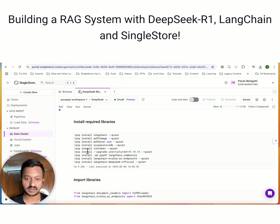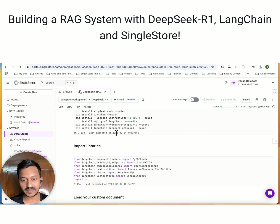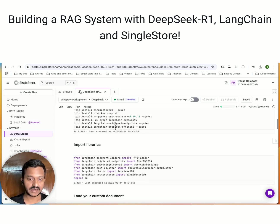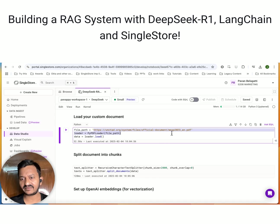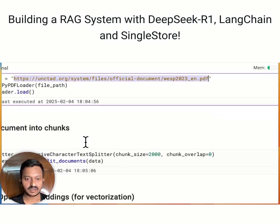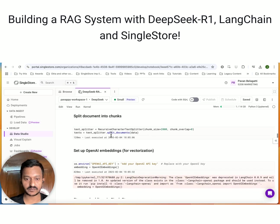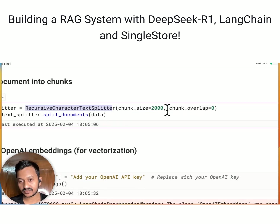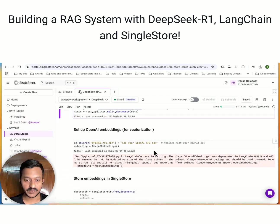Install the required libraries - LangChain, SingleStore, LangChain NVIDIA endpoints, LangChain DeepSeek, and all that. Then import the libraries and load your custom document. I'm using a publicly available PDF file and loading it. Next, split the document into chunks using a recursive character text splitter with a chunk size of 2000 and chunk overlap of zero. Then we'll set up OpenAI embeddings to create vector embeddings of our chunks.